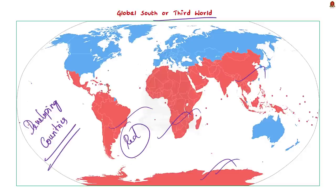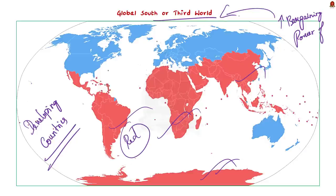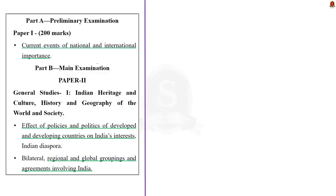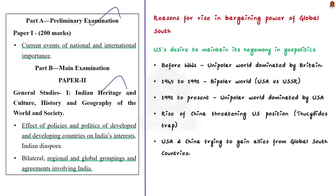The editorial mainly focuses on the increasing bargaining power of the Global South and how these countries are using this bargaining power to maintain their autonomy. This is the basic essence of the editorial. Let us see all points mentioned in the editorial in detail. The syllabus relevant to the news article is given here for your reference. Let us start the discussion by seeing the reasons for the rising bargaining power of the Global South.